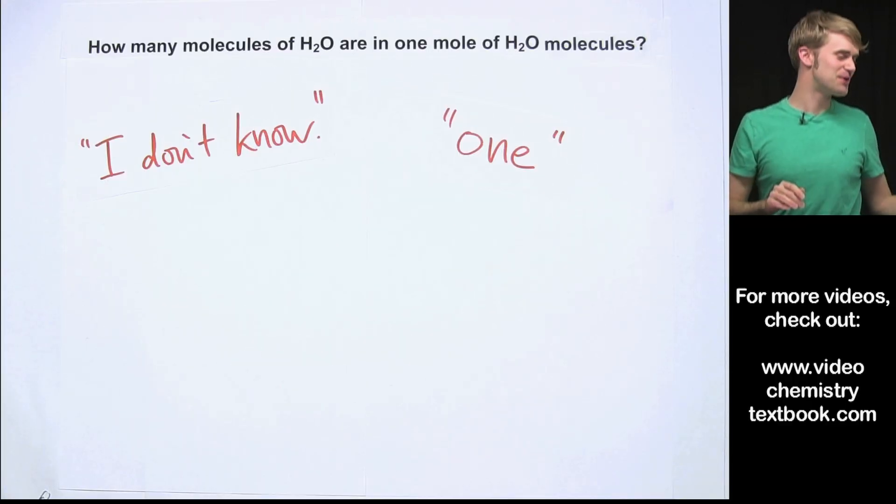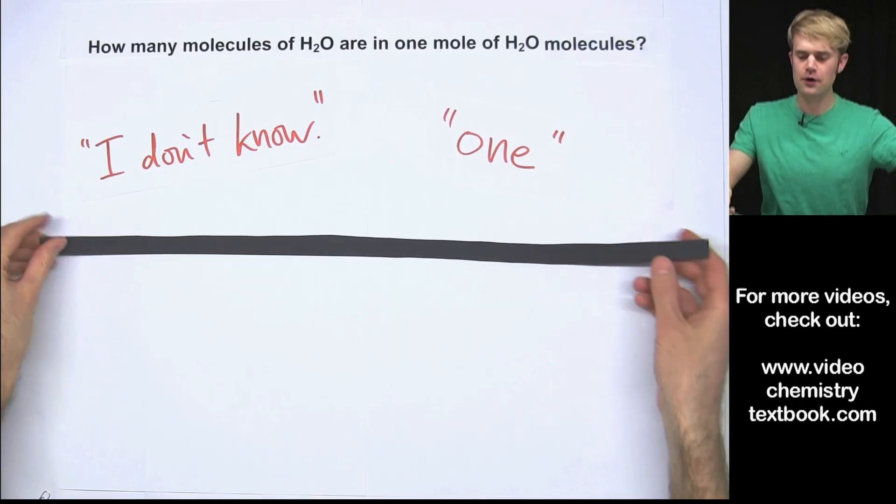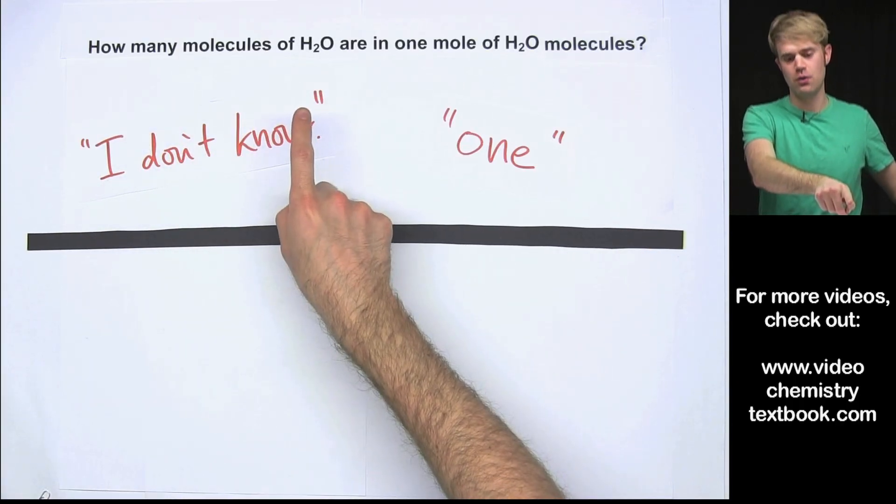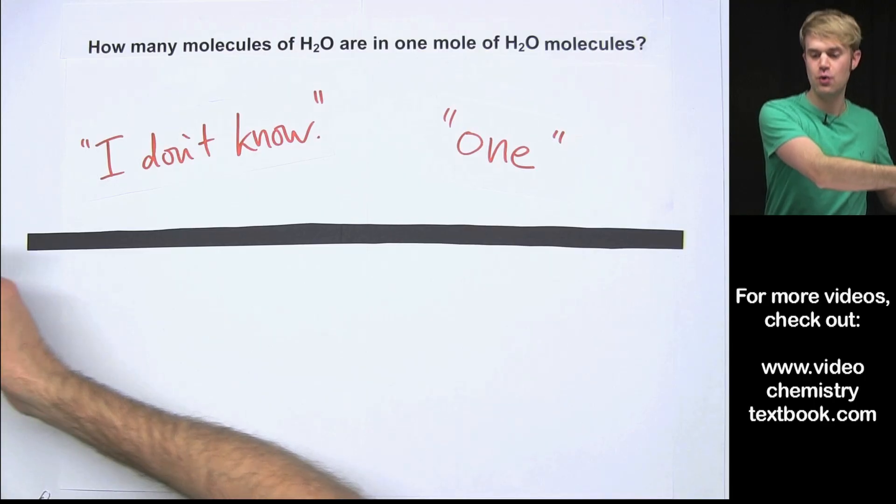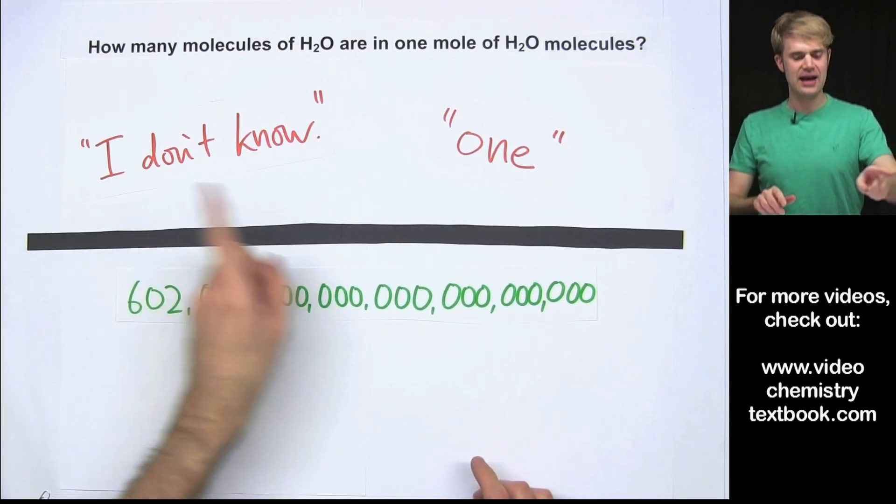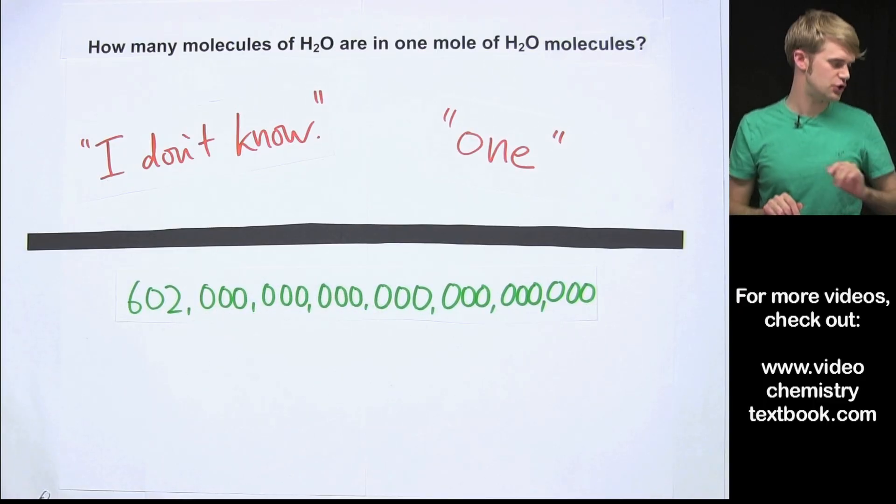Unfortunately, neither of these is really what I'm looking for. The correct answer to this question - how many molecules of H2O are in one mole of H2O molecules - is 602 hexillion molecules of H2O.